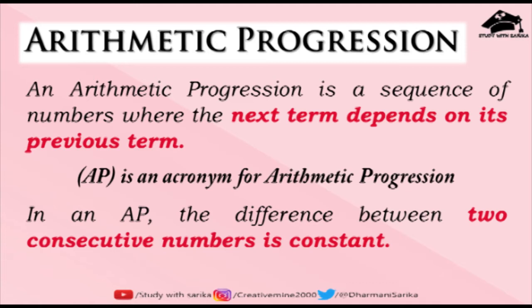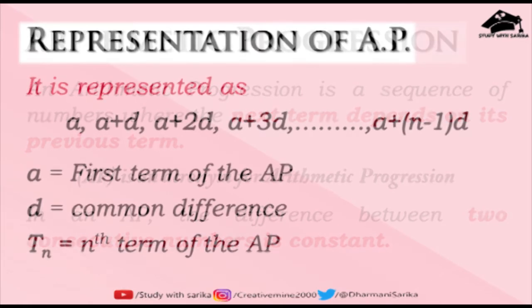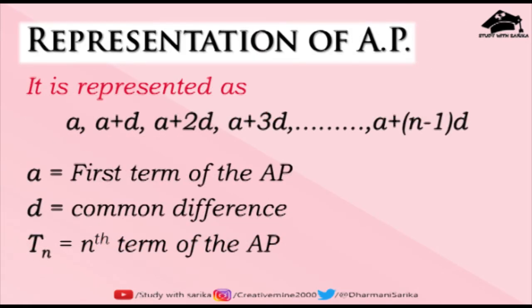So let's see what symbols and terms are used in AP, and how we represent AP mathematically. An AP is represented as: A, A plus D, A plus 2D, A plus 3D, dot dot dot, till A plus N minus 1 times D. Here I have written a series for N numbers.